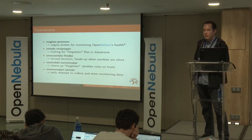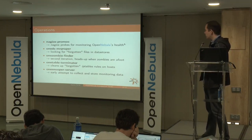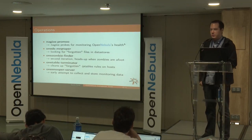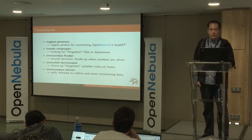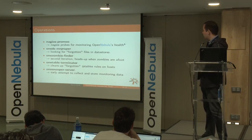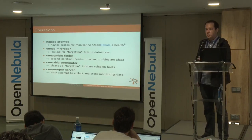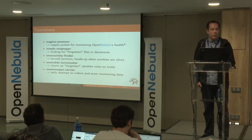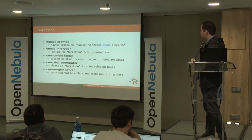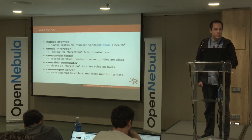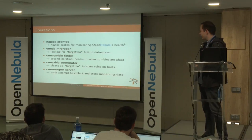As soon as OpenNebula notices a zombie, we will receive an email and can deal with that. OneTableTerminator is a tool we used earlier with OpenNebula 4 because it was a bit unreliable when cleaning up IP table rules, so we had an extra tool checking and cleaning up. We have been running OpenNebula 5 for more than three quarters of a year now and this issue seems to have disappeared — so great job, this is no longer necessary.